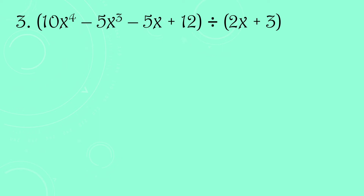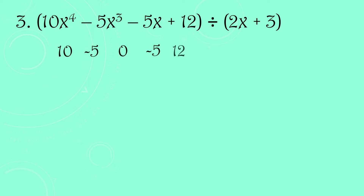Before that, write the coefficients of the dividend. There is a missing power — power of 2 — so we place a 0 for that. The coefficients are: 10, negative 5, 0, negative 5, and 12.